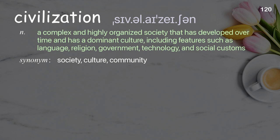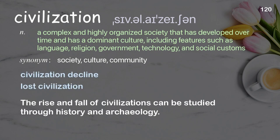Civilization: a complex and highly organized society that has developed over time and has a dominant culture, including features such as language, religion, government, technology, and social customs. Examples: civilization decline, lost civilization. The rise and fall of civilizations can be studied through history and archaeology.